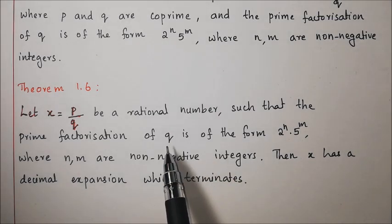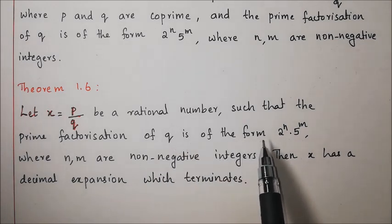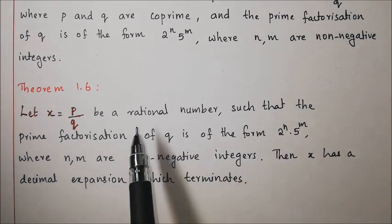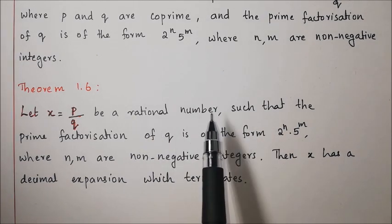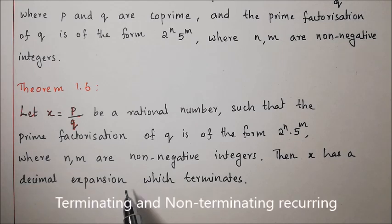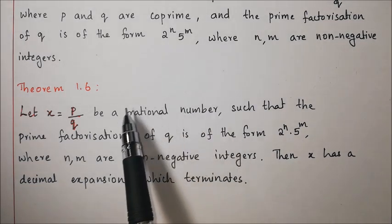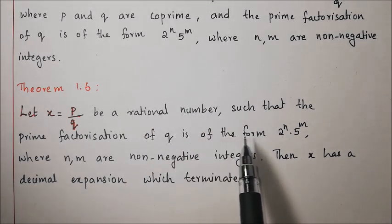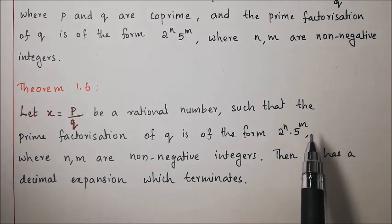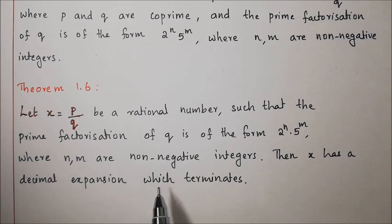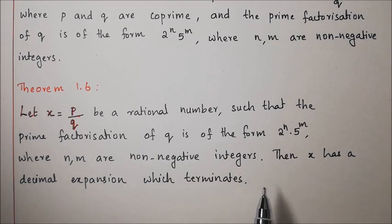Now think: what will happen if q is not in the form of 2 to the power n into 5 to the power m? We know rational numbers can have only two types of decimal expansions — either terminating or non-terminating recurring. So if q is not in that form, the decimal expansion will be non-terminating recurring. That is the next theorem.